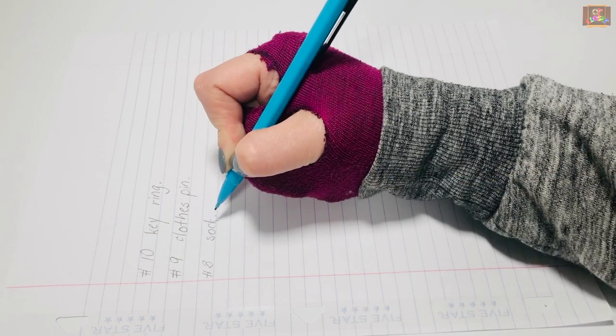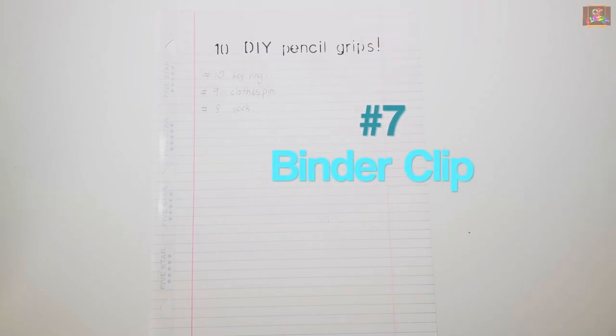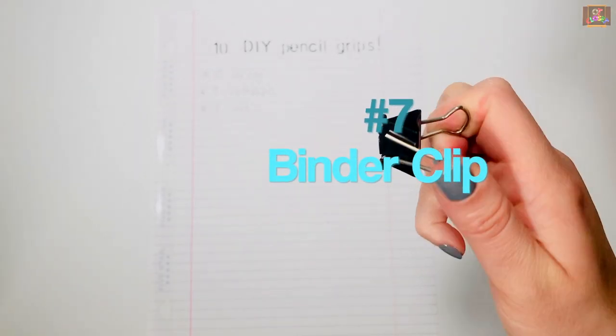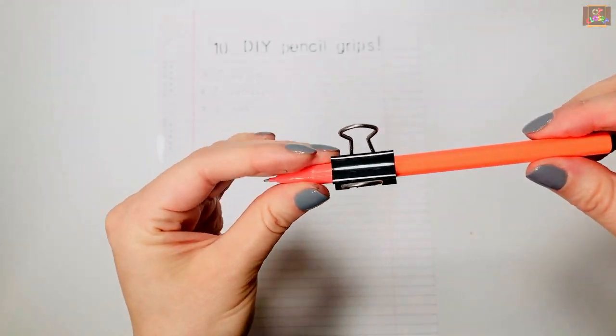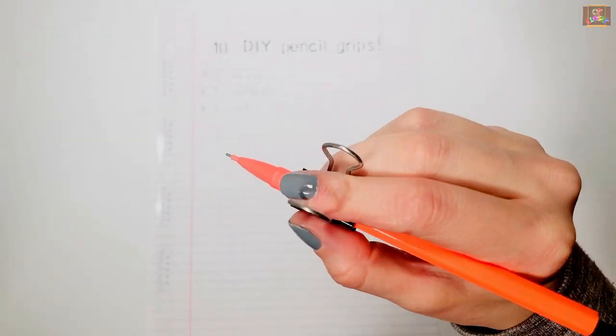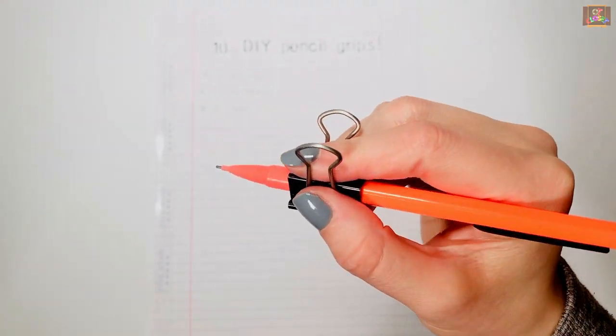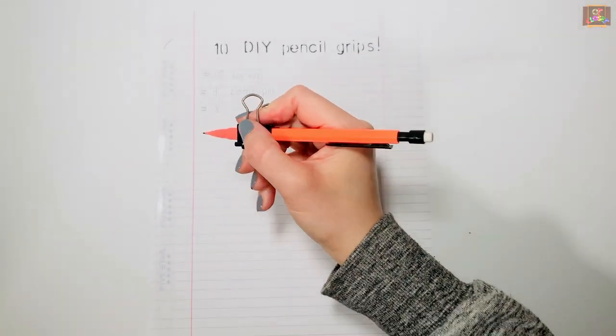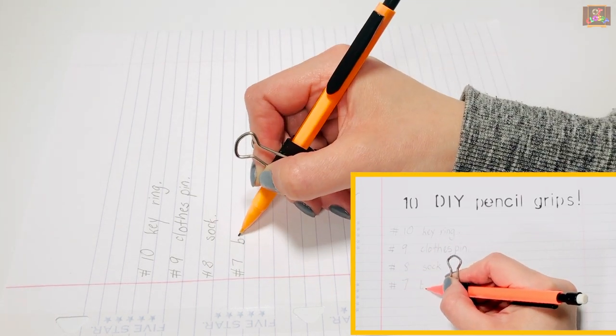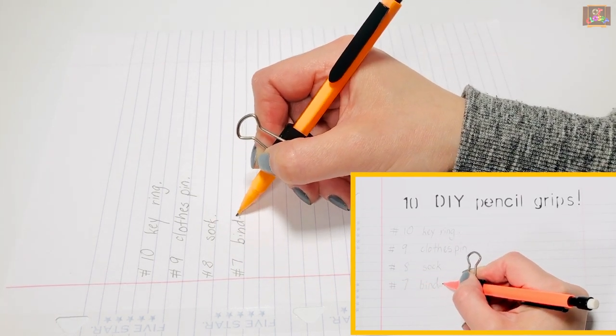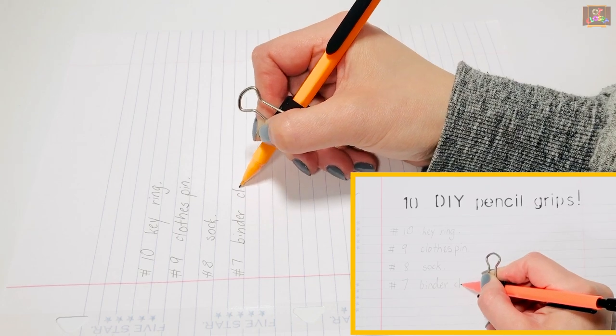Number 7: Binder Clip. Open the binder clip and place it securely on the shaft of the pencil. Position your index finger between the clips of the binder. This grip support assists with separation and provides boundaries between the thumb, index, and middle fingers.